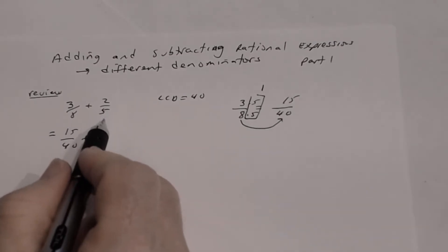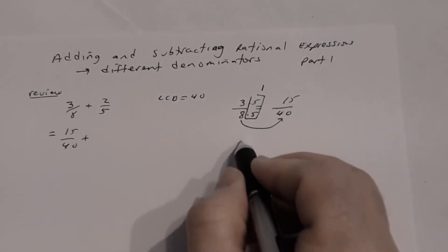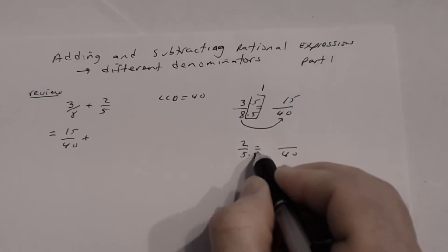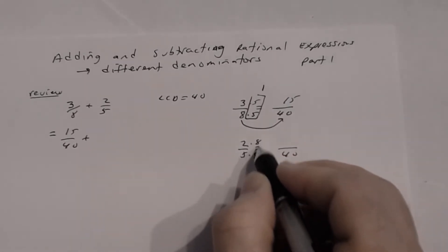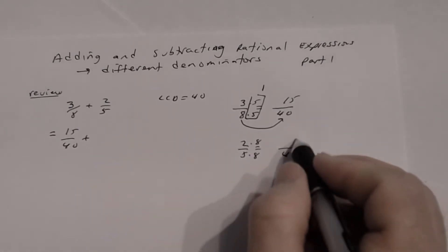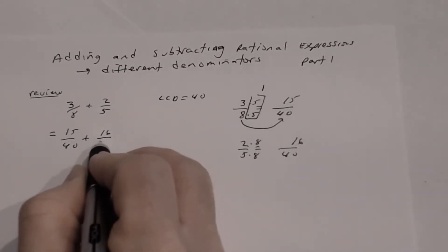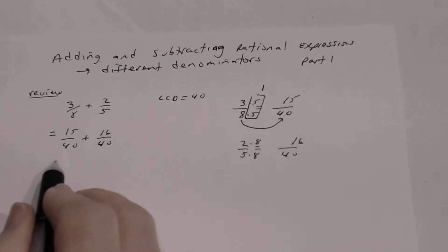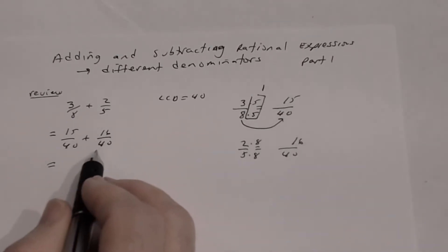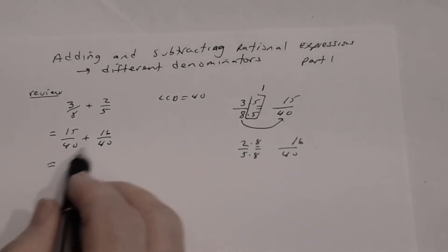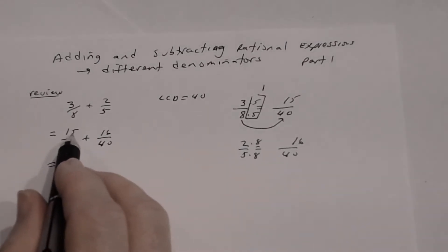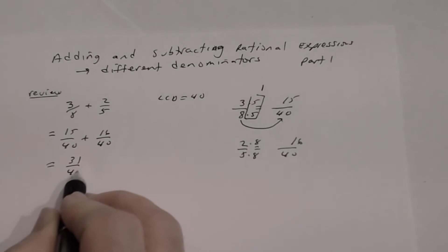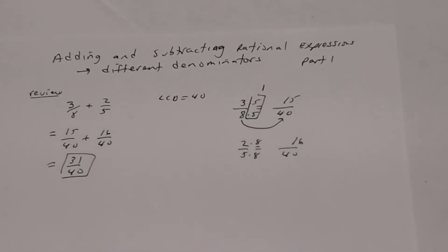Now write an equivalent fraction for 2/5 using the LCD of 40. Since 5 × 8 = 40, multiply numerator and denominator by 8: 2 × 8 = 16, giving 16/40. Now both fractions have the same denominator, so 15/40 + 16/40 = (15 + 16)/40 = 31/40. That's your answer for this review example.